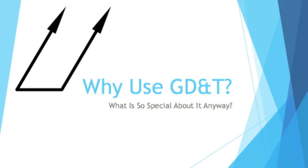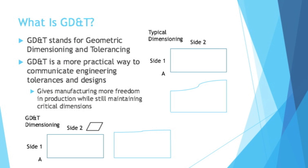Why use GD&T? What is so special about it anyway? GD&T stands for Geometric Dimensioning and Tolerancing. Basically, GD&T is a more practical way to communicate engineering tolerances and designs. It gives manufacturing more freedom in production, while still maintaining critical dimensions.